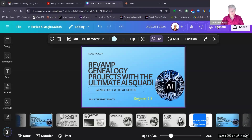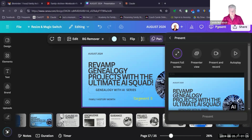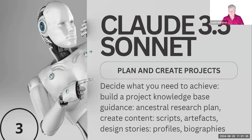Hello everyone, Coach Carol here with the next segment in the Genealogy with AI series, all about revamping genealogy projects with the ultimate AI squad. In this presentation, we're focusing on Claude 3.5 Sonnet. Claude is a little different in its structure and the way in which you can set up projects in the background to organise your conversations. We'll get into that in a moment.